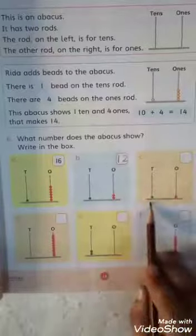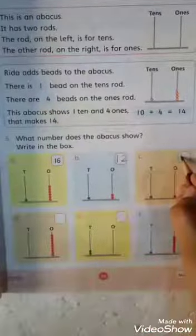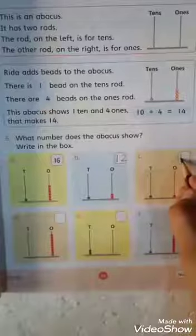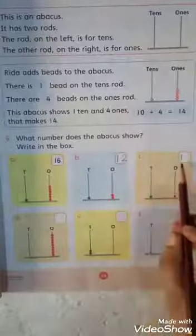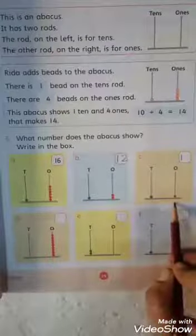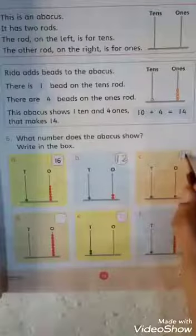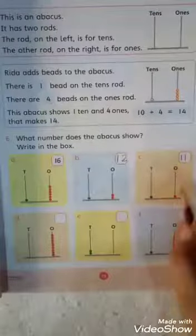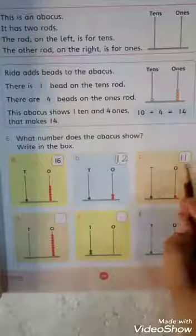Here in the ones column, we have one. So you will write one at the left-hand side for tens, and one at the right-hand side for ones — that makes it eleven.